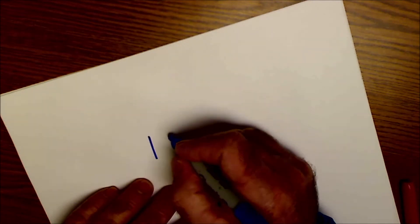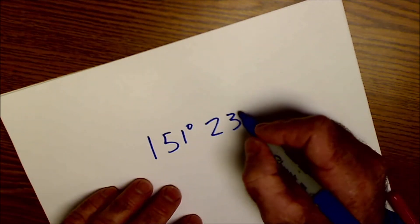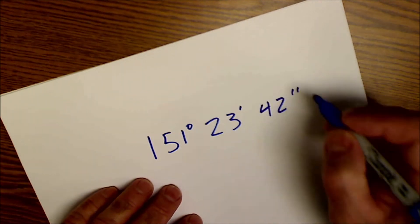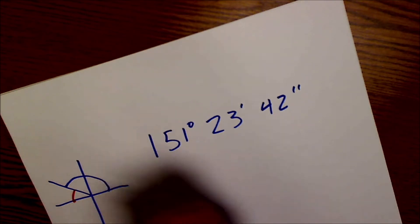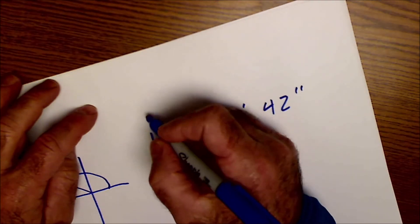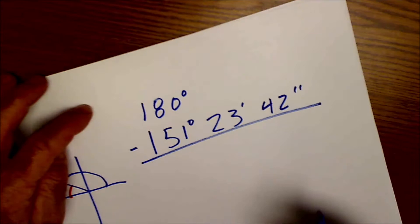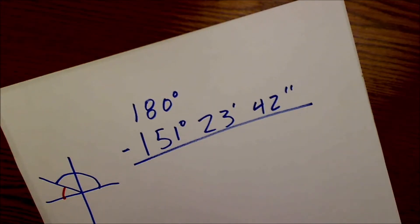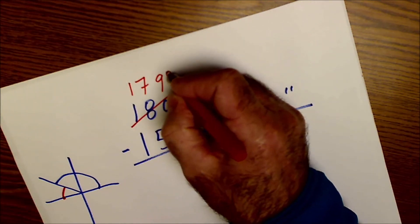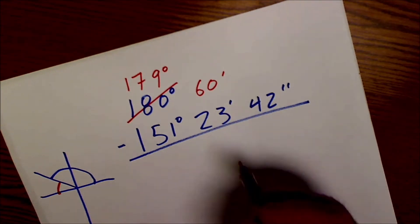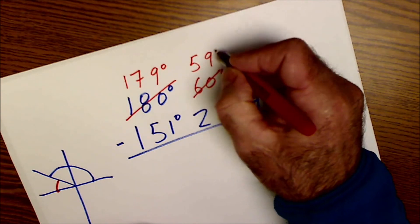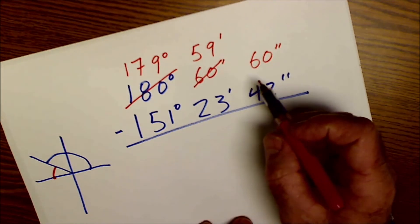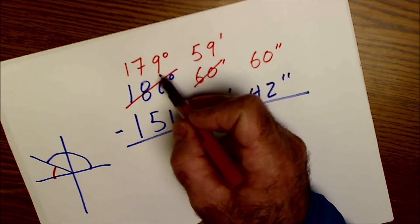Let me do one more. Let's say I have an angle of 151 degrees, 23 minutes, 42 seconds. Again, that's a second quadrant value. My reference angle is this red angle here. To find it, I do 180 minus that. So 180 degrees, 0 minutes, 0 seconds. That doesn't work, so I borrow one degree to get 179 degrees, 60 minutes. But I still have 0 minus 42 seconds, so I borrow one minute to get 59 minutes, 60 seconds. 60 seconds makes one minute, 60 minutes makes one degree.